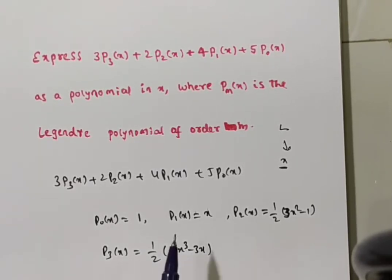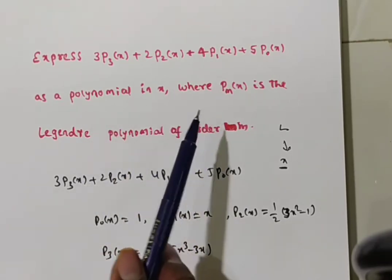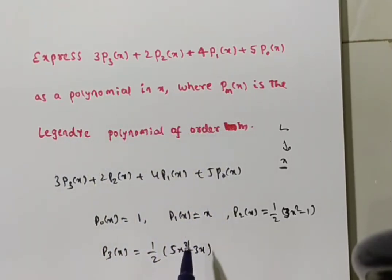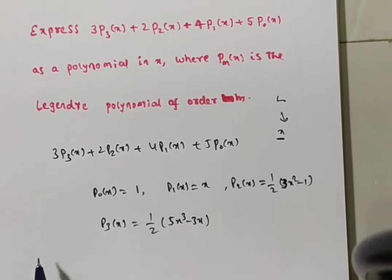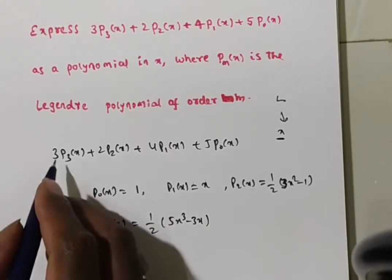Now what we have done? Legendre polynomials P₀, P₁, P₂, P₃ all are written in algebraic polynomial. So now you substitute these all values in the given Legendre polynomial equation. Then we will get a general polynomial in terms of x.